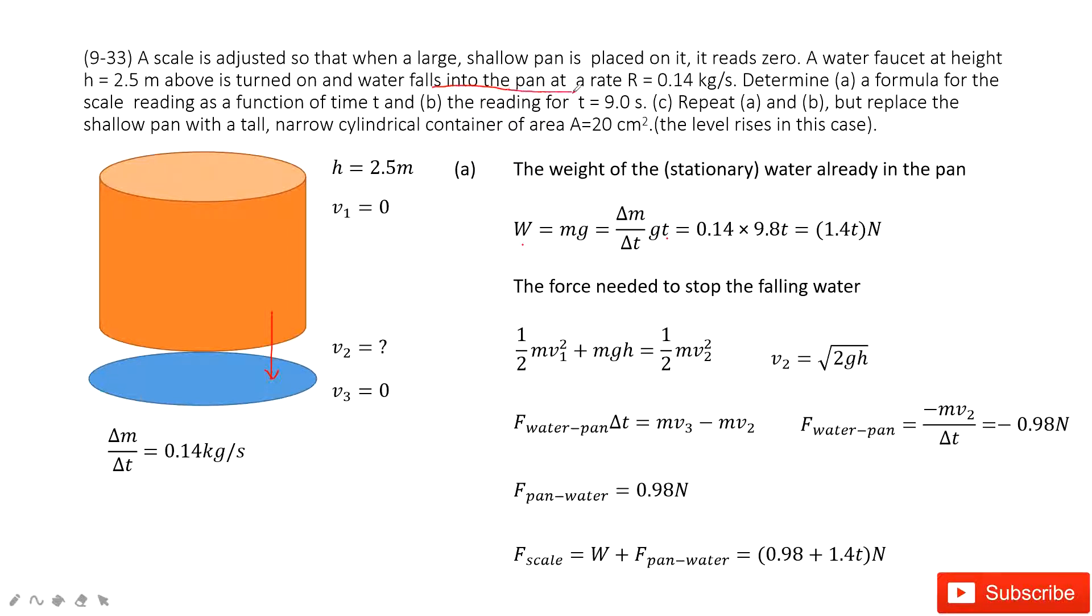The water falls into the pan and arrives at 0.14 kg per second. Therefore, when we put it inside, we get the final answer. This is the weight of the stationary water, W, the function changes with t.